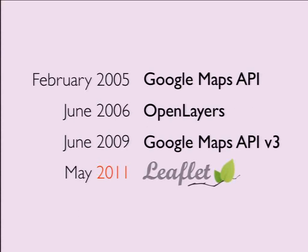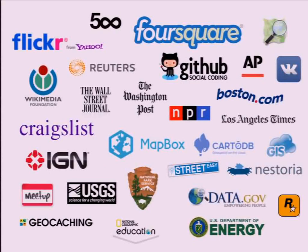In a very, very short time, this really simple piece of software gained such a hugely popular presence on the web. In a very short amount of time, something so simple got used by the biggest players in the online world — Flickr, Foursquare, GitHub, OpenStreetMap switched to it on the front page. All the major newspapers like New York Times, Washington Post, The Guardian, the most innovative geo companies like Mapbox and CartoDB use it, lots of government agencies, and even Wikipedia uses it.